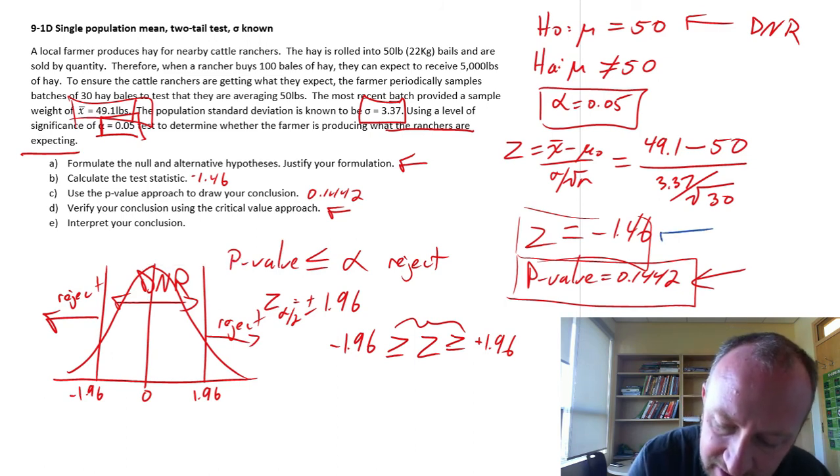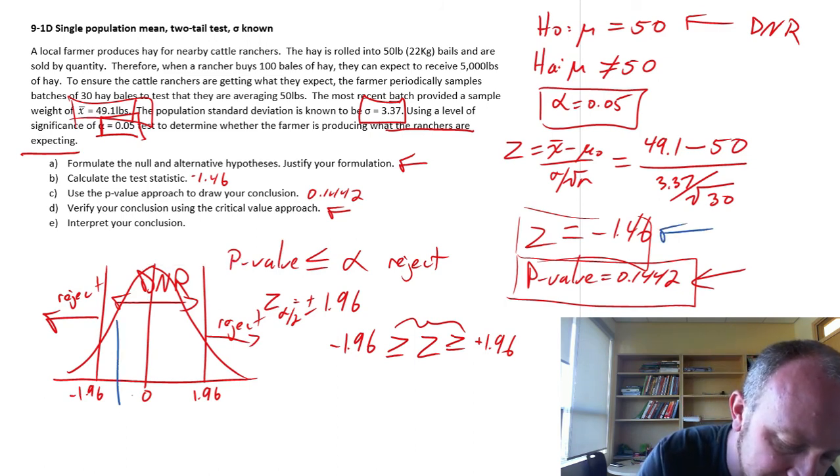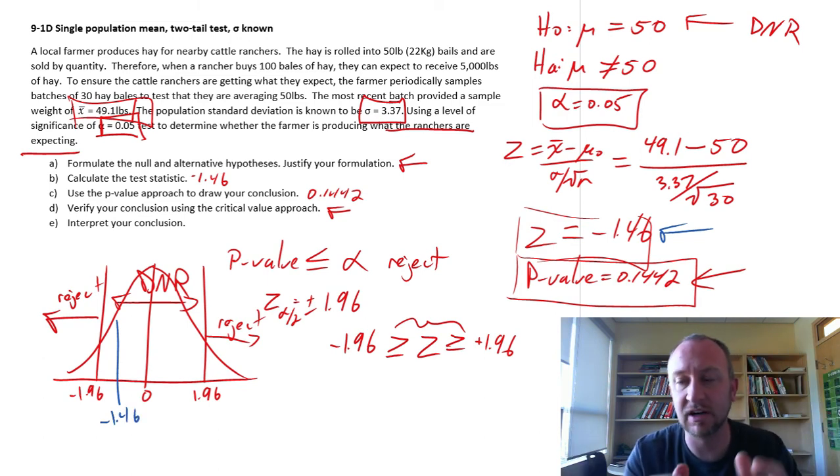Everything in between, we do not reject. And so, then I can go and find, well, my test statistic is negative 1.46. So, that's somewhere right in here, which is in my do not reject space.